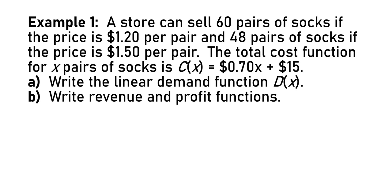Here is an example. A store can sell 60 pairs of socks if the price is $1.20 per pair and 48 pairs of socks if the price is $1.50 per pair. The total cost function for X pairs of socks is C of X equals $0.70 times X plus $15.